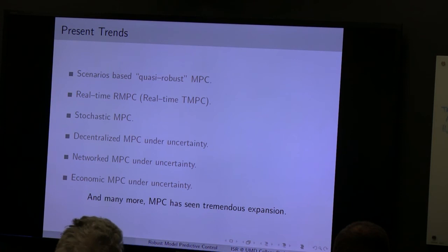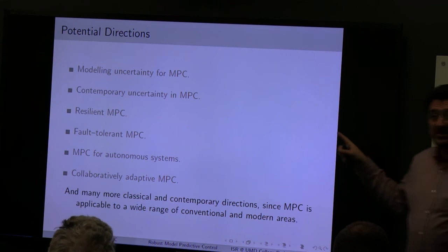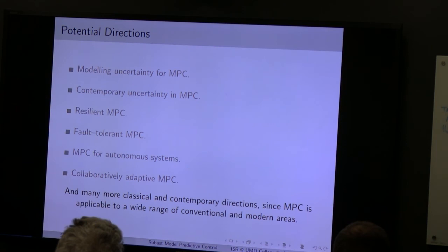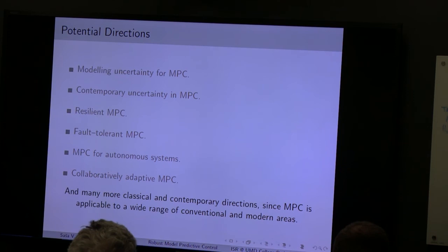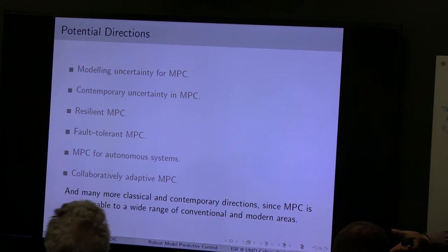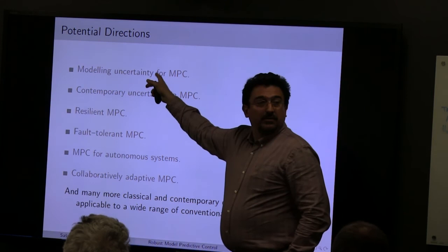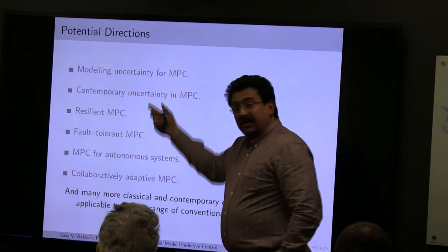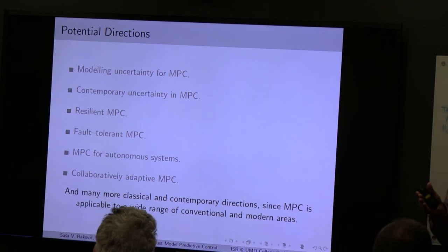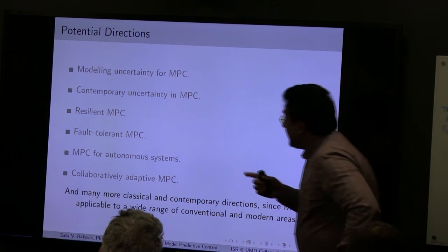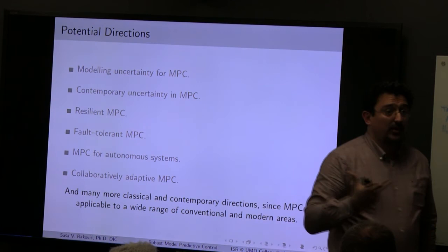What are the potential directions? You can try to model uncertainty more carefully — doing min-max without saying more about uncertainty is conservative. If you tell me more about uncertainty, such as that it has dynamics or trends, I can do a better min-max. So: model uncertainty for robust MPC, and use those models. Secondly, with new systems — autonomous, cyber-physical — there is a different type of uncertainty that needs to be modeled and understood. Once you start doing that, you talk about resilient MPC, fault-tolerant MPC — extremely important for autonomous systems.